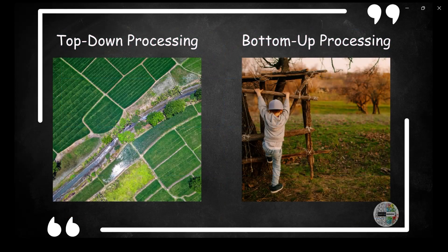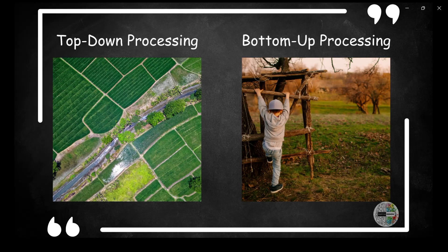So an easier way to remember this is, top-down processing starts with what you know and uses that knowledge to understand something. So it's like getting an aerial view of the landscape and you know exactly what is where. However, bottom-up processing starts with the raw sensory input and builds understanding from there without relying on prior knowledge. It's like you're climbing the rope ladder to get to the top of your tree house to get an aerial view and make sense of things. Both these approaches are important in how we perceive and make sense of the world around us. Sometimes we even use a combination of both depending on the situation.